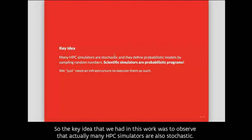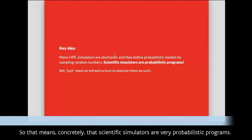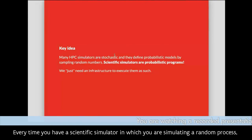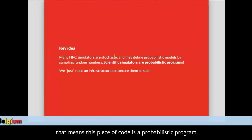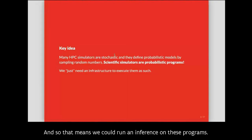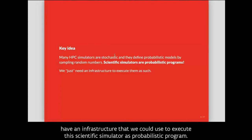This is unfortunate because simulators exist as the output of decades of development by scientists — we don't want to rewrite everything from scratch. The key idea in this work was to observe that many HPC simulators are also stochastic and define probabilistic models by sampling random numbers. That means scientific simulators are already probabilistic programs. Every time you have a scientific simulator drawing random numbers to simulate a random process, that piece of code is a probabilistic program, and we could run inference on it.